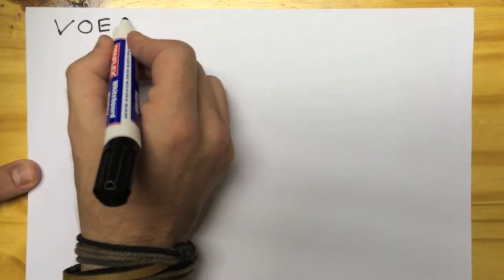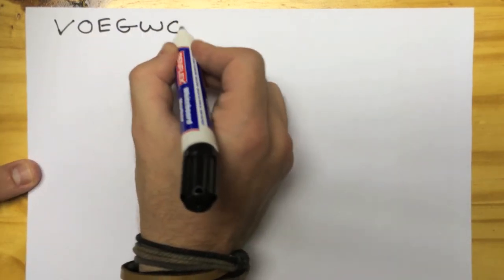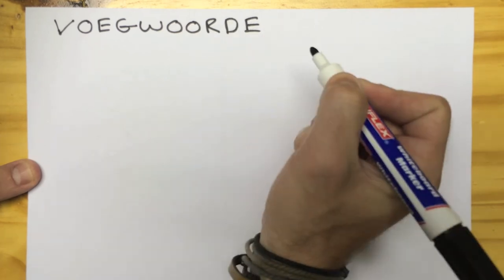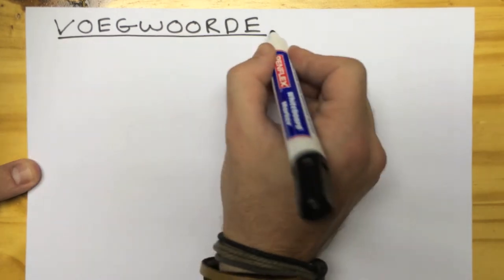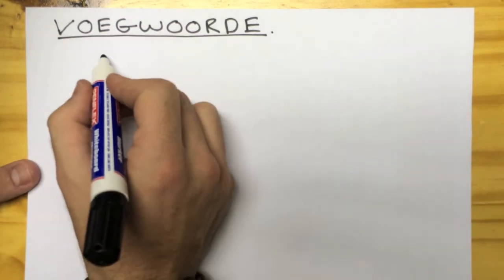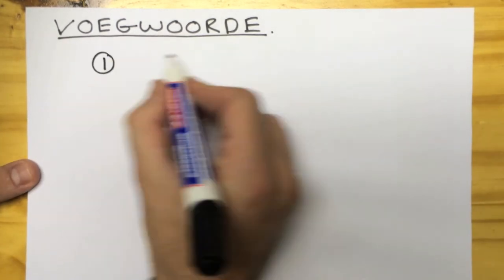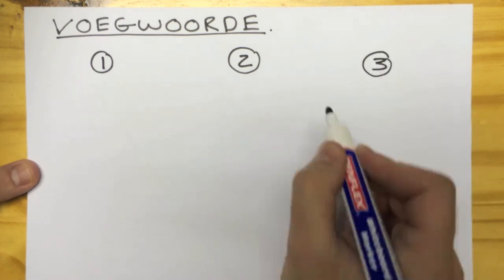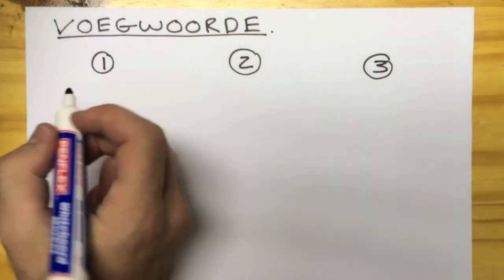Vugwoorde — vugwoorde kan in drie groepe verdeel word. Groep 1, Groep 2, Groep 3.